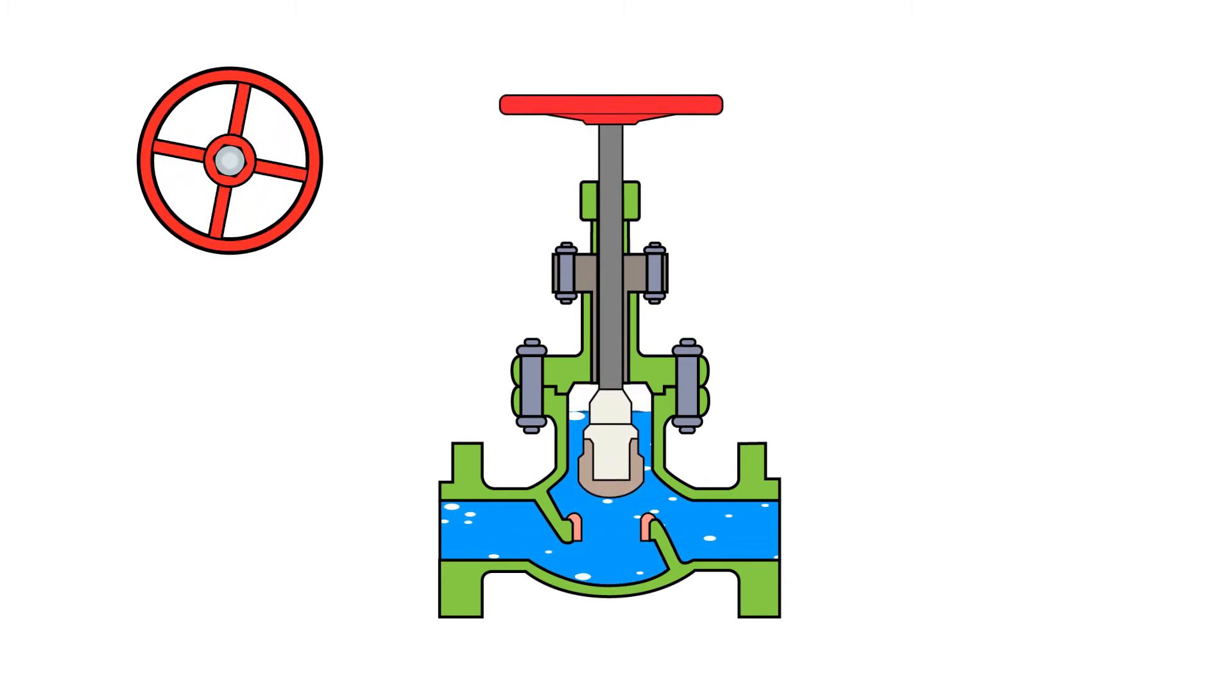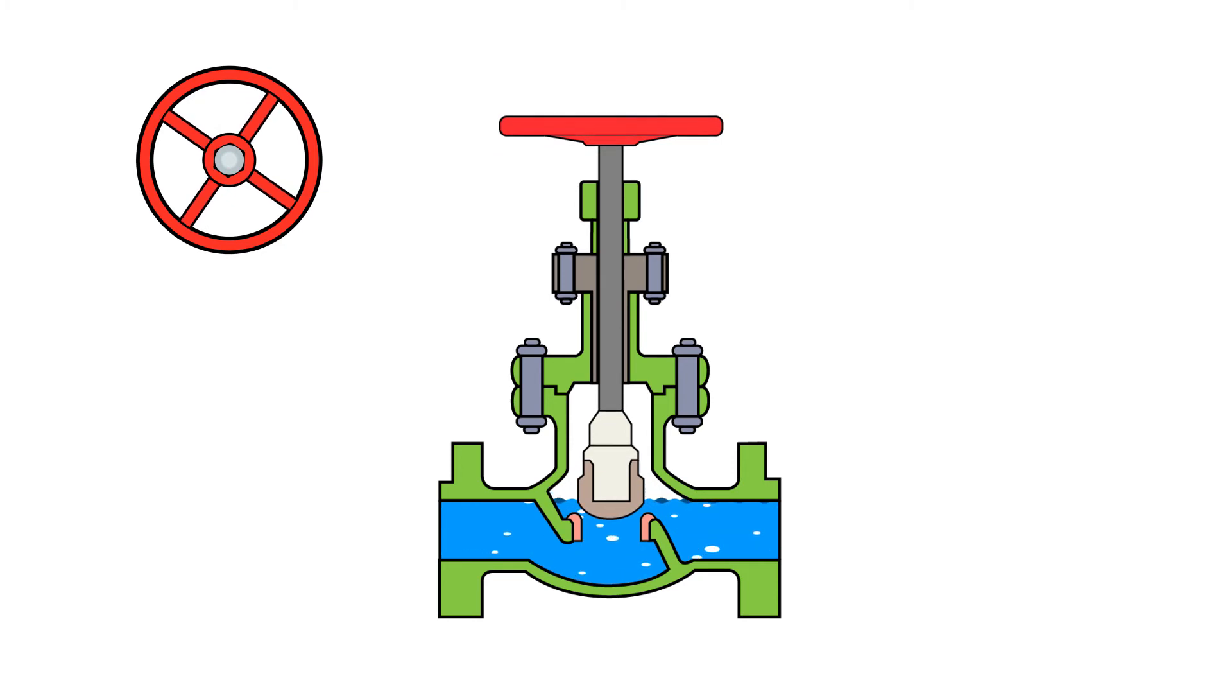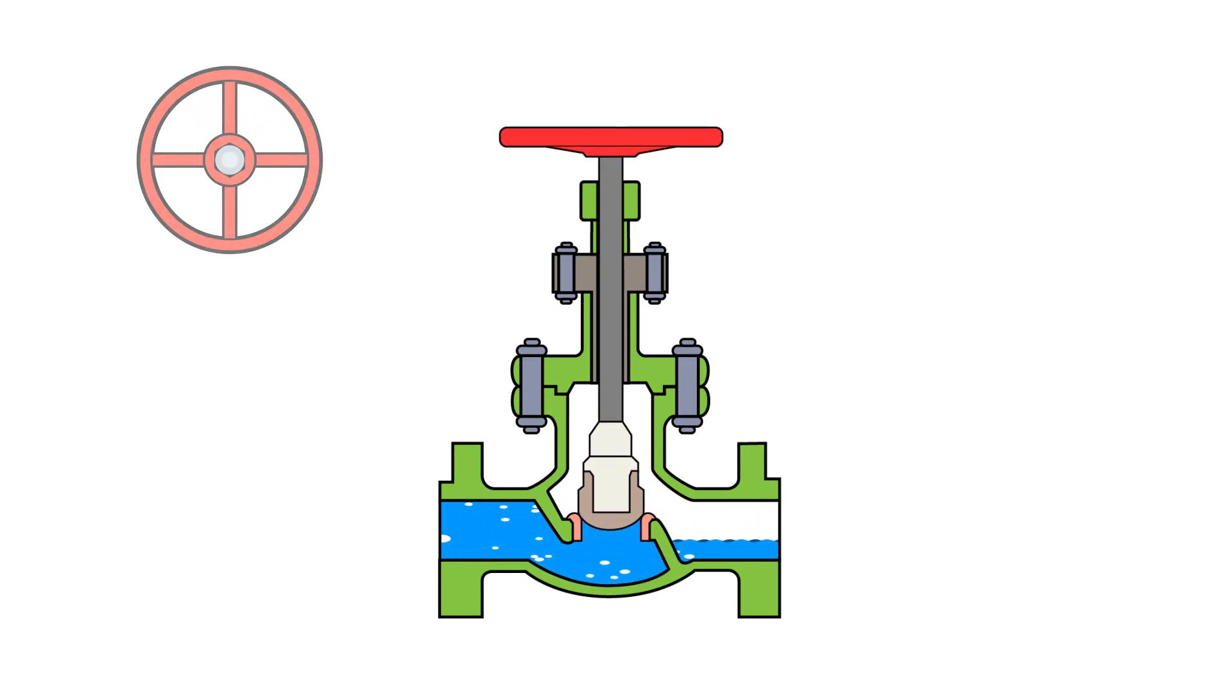Depending upon how close the disc is to and from the seat, there will be more or less fluid flow. With the hand wheel turned in a clockwise motion, the valve will be closed.